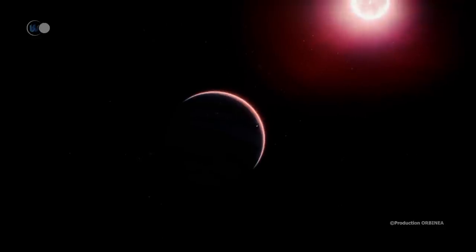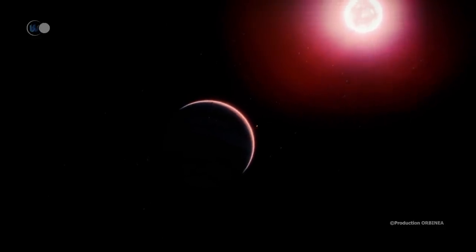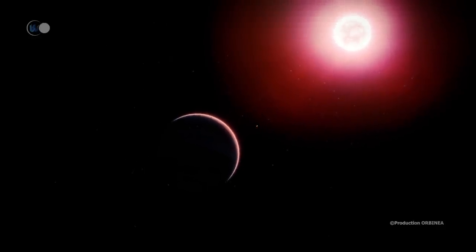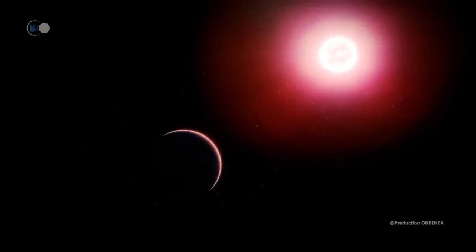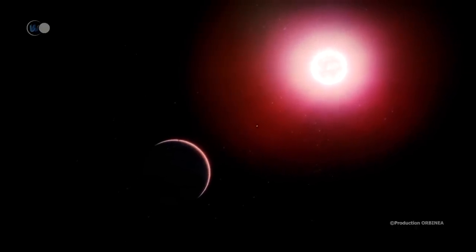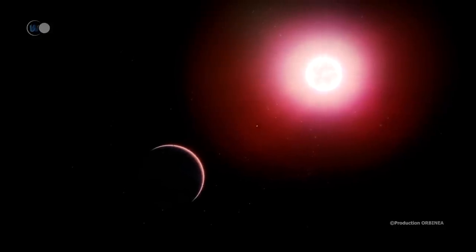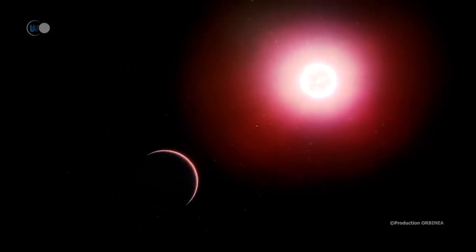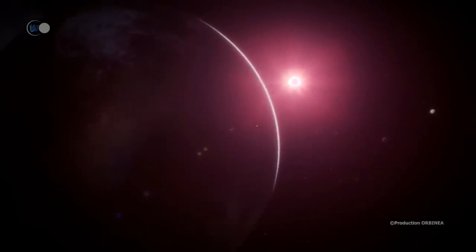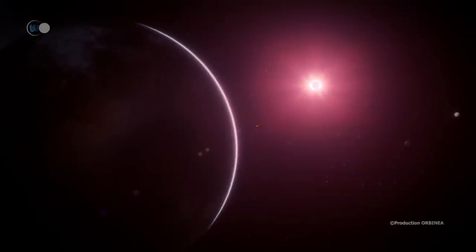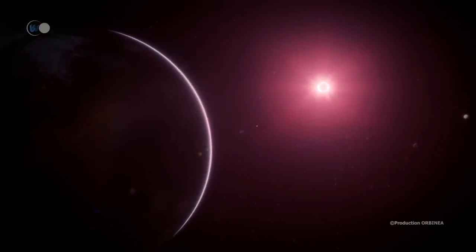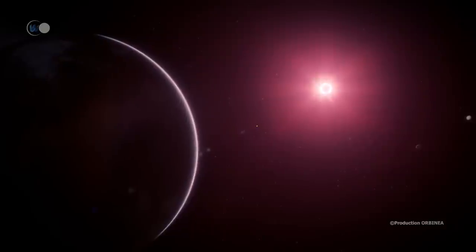Do not rejoice too quickly, because unfortunately, for it too, the conditions are not optimal for it to harbor any form of life. Although a little further away from the star than the first described super-Earth, it is only 17 million kilometers, or 11 million miles, away. Once again, it is too close, and therefore too hot, to maintain water in a liquid state. The temperature of its atmosphere having to reach at least 70 degrees Celsius, or 158 degrees Fahrenheit.